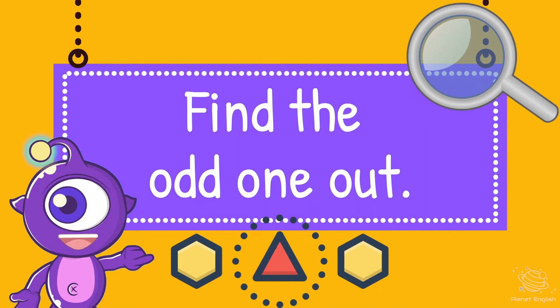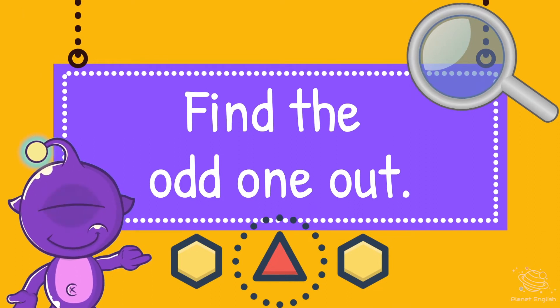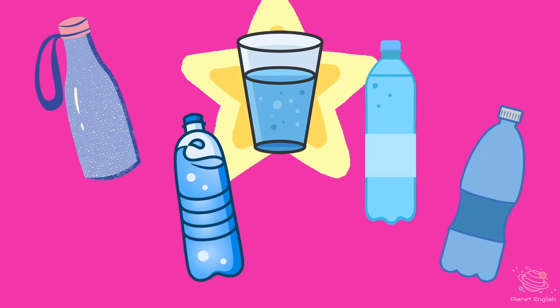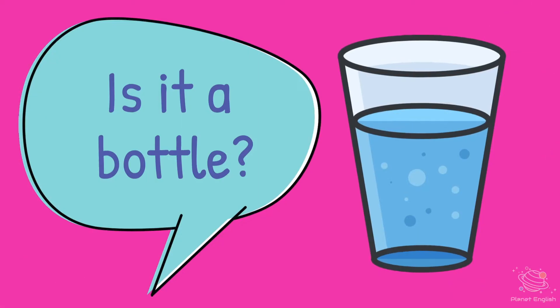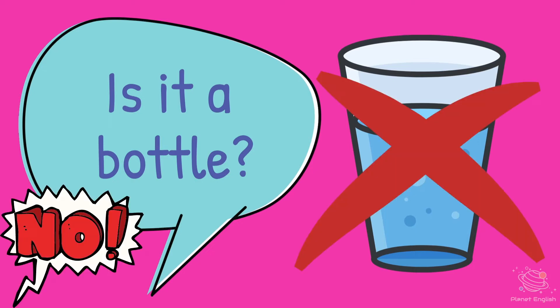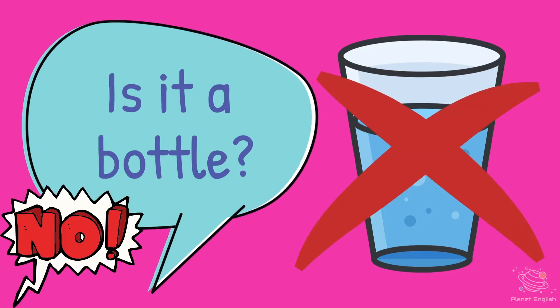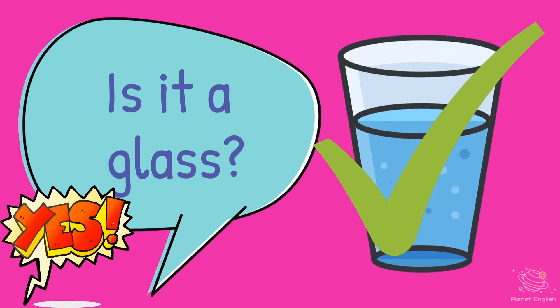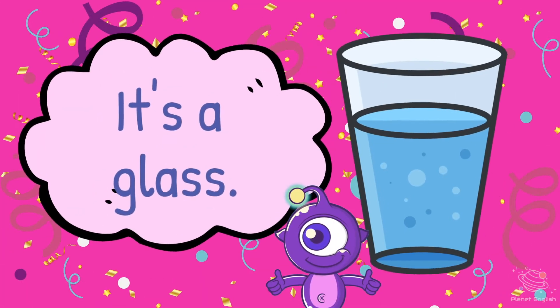Now find the odd one out. Hmm, where is the odd one out? Five, four, three, two, one. Is it a bottle? No. Is it a glass? Yes! It's a glass.